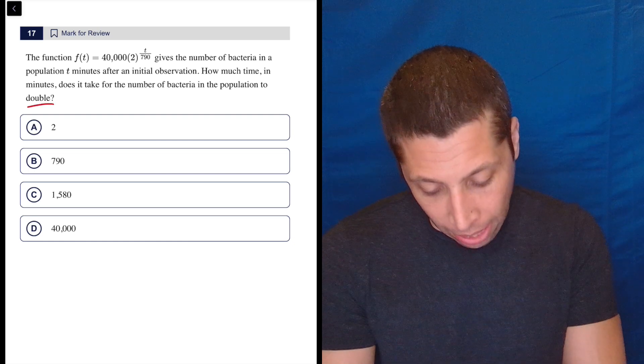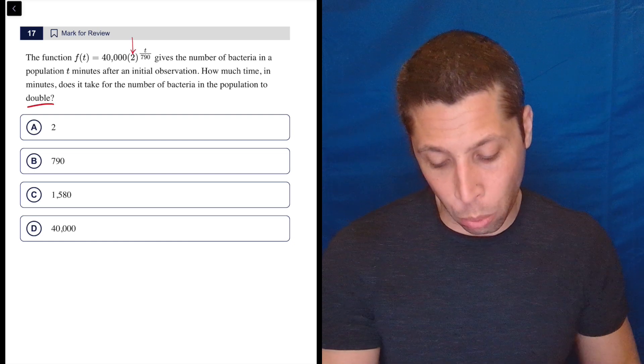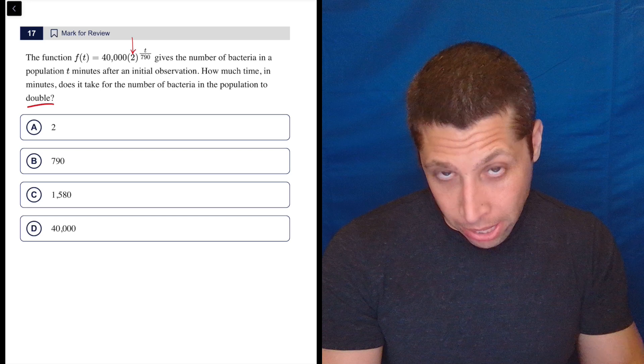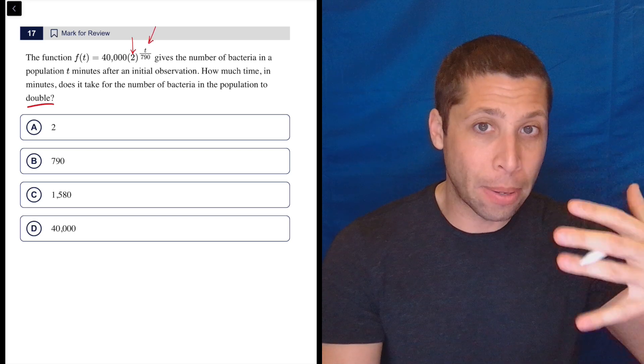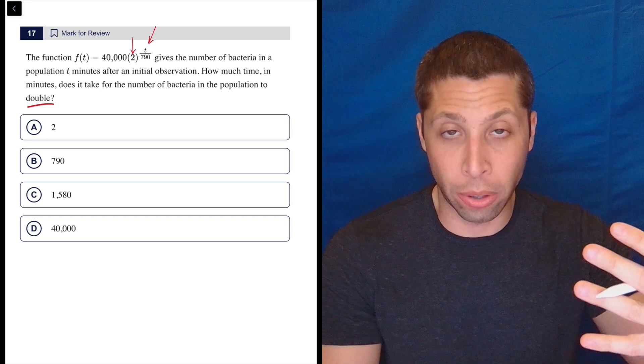So the doubling is going to kind of show up right here with this 2, but that's not two minutes. That's showing us the doubling. And so when does the doubling happen? It happens when this exponent is going to do certain things.